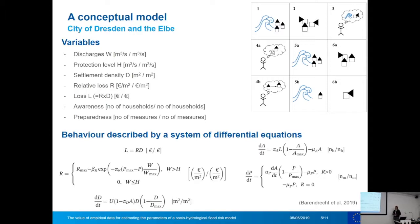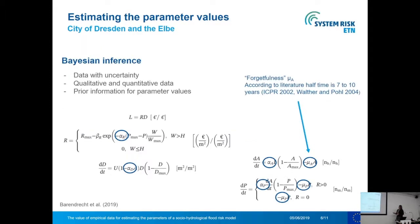We describe the behaviour of this system with a system of differential equations with parameters that represent the social characteristics of the system. One example is the parameter muA, which determines the forgetfulness of the system — how fast people forget about the risk after they have experienced a flood event.